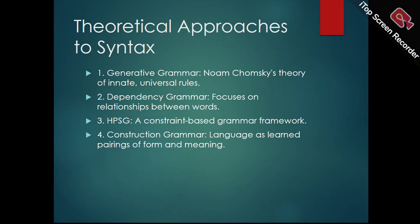Generative grammar is Noam Chomsky's theory that suggests humans are born with an innate ability to understand and produce language, driven by a language acquisition device (LAD). This theory proposes a universal grammar — a set of rules common to all languages. Chomsky introduced deep structure (the underlying meaning of sentences) and surface structure (how sentences are expressed) to explain language formation. Transformational rules allow deep structures to be converted into various surface structures, like questions or passive sentences. The theory emphasizes children acquire language rapidly based on innate principles, known as the poverty of the stimulus. Generative grammar revolutionized linguistics, evolving notably into Chomsky's minimalist program.